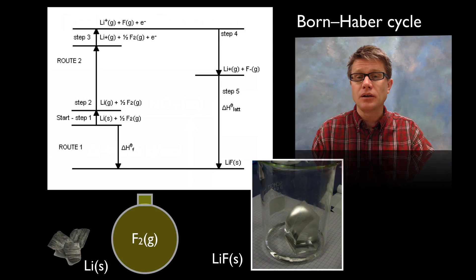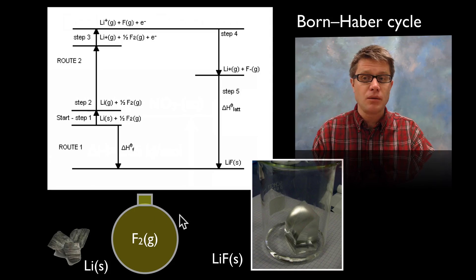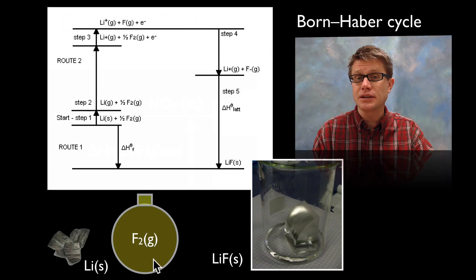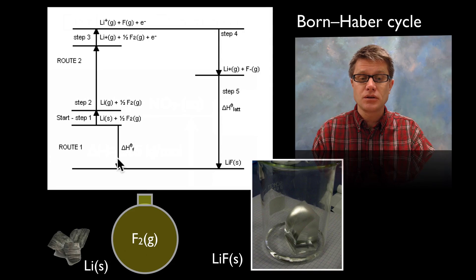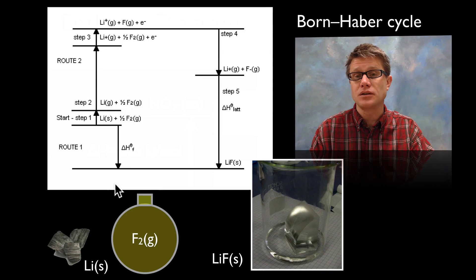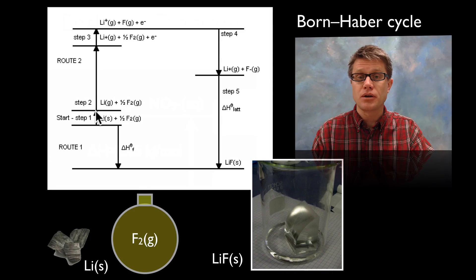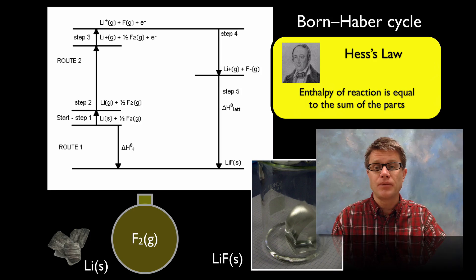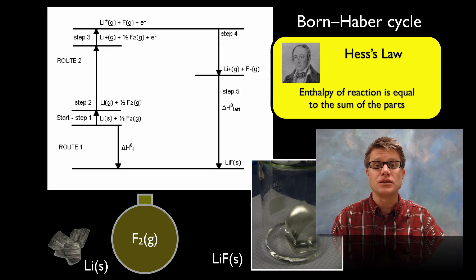If we take a look at a reaction, we find that it's usually made up of a number of smaller reactions. In this Born-Haber cycle, we're taking lithium solid and combining it with fluorine gas to make lithium fluoride. The overall change in enthalpy is small and negative, making it an exothermic reaction. But if we look at all the steps, some are endothermic and some are exothermic. This is the next Hess's law idea: the enthalpy of the reaction equals the sum of all of the reactions that make it up.